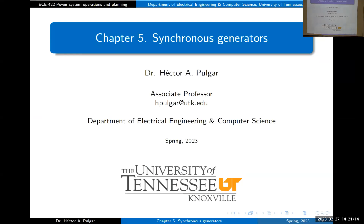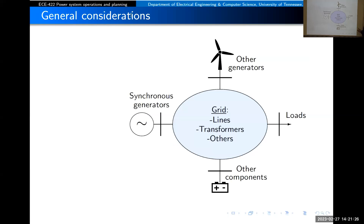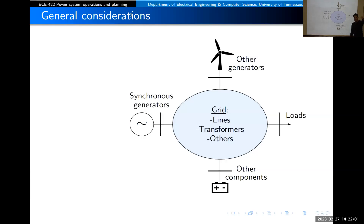Before getting into the synchronous machine, we still have one more definition related to what we consider the grid. I prefer to define it this way because we need a distinction between what the grid is and what we connect to it. Components connected to the grid include loads, generators, wind energy, and energy storage — all connected to a point with a given voltage and power. The grid itself consists of all the components that interconnect different points of the system.